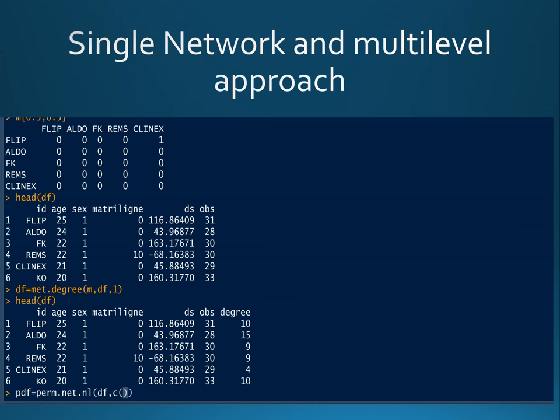Here we will permute individual attributes: age, sex, matriline, and David's score, the hierarchical rank of individuals. Finally, the last argument in this function is the number of permutations you want. Here we will do 10,000 permutations.